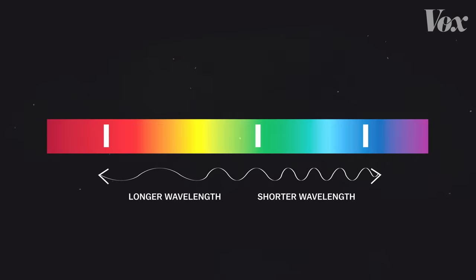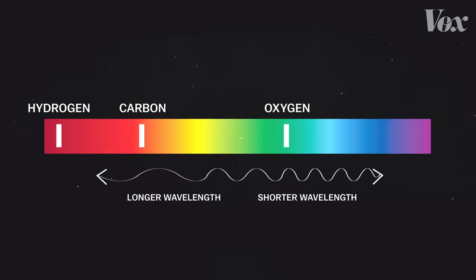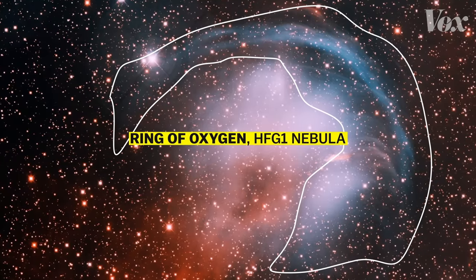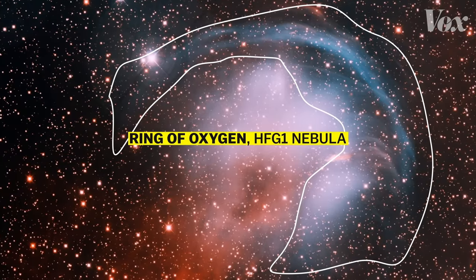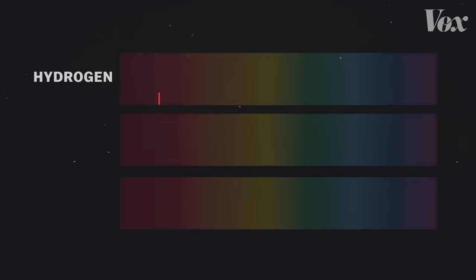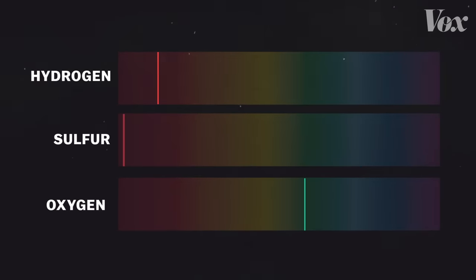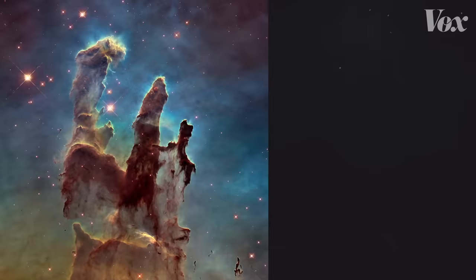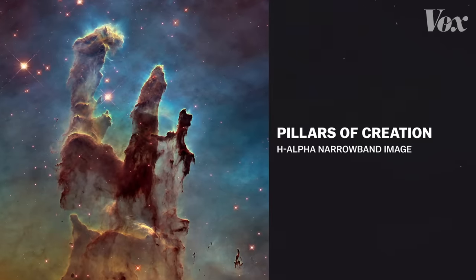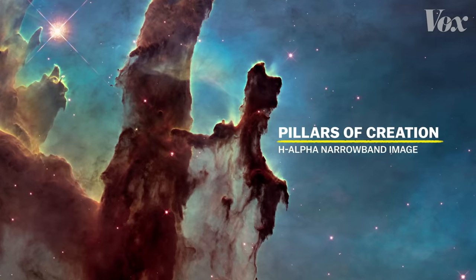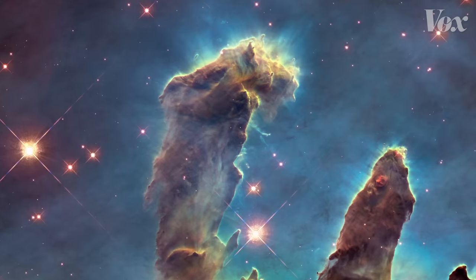Hubble can record very narrow bands of light coming from individual elements, like oxygen and carbon, and use color to track their presence in an image. This is called narrowband filtering. The most common application of narrowband filtering isolates light from hydrogen, sulfur, and oxygen — three key building blocks of stars. Hubble's most famous example of this is called the Pillars of Creation, which captured huge towers of gas and dust forming new star systems.